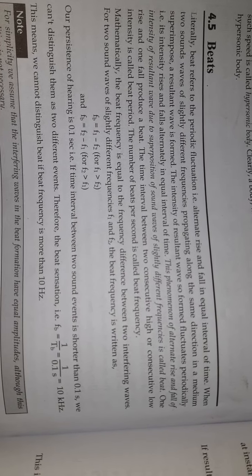Let's write this: Let us consider two waves of frequency f1 and f2 such that f1 minus f2 is less than 10 hertz. Let them start with the same phase and with same amplitude A. If y1 and y2 be the displacement of particles of the medium due to these waves at a certain time, then we have y1 equals A sin omega 1 t, which is equal to A sin 2 pi f1 t, as we know omega equals 2 pi f. And y2 equals A sin omega 2 t, which we can write as A sin 2 pi f2 t.